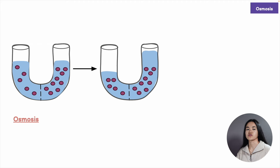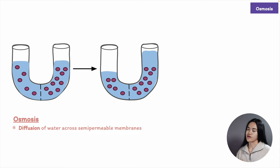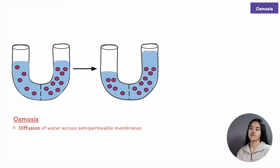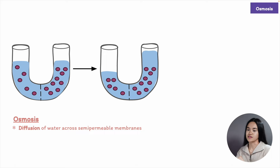Osmosis is the net diffusion of water across semi-permeable membranes. Water is a polar molecule, and the diffusion of water is mediated by aquaporins — a class of membrane proteins that create channels through which water can diffuse. Osmosis is similar to diffusion in that there is a difference in water concentration. Water moves from an area of low solute concentration to an area of higher solute concentration. A solute is atoms, ions, or molecules dissolved in a liquid, and the total amount of particles dissolved in the solution determines the rate of osmosis.